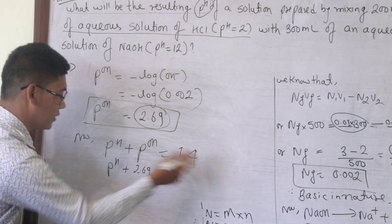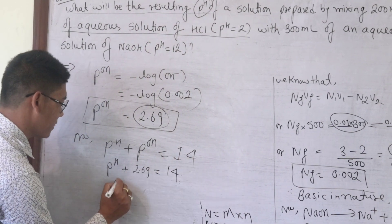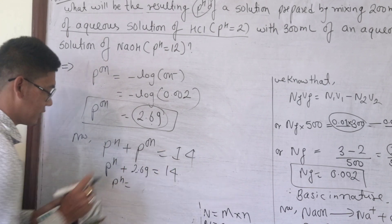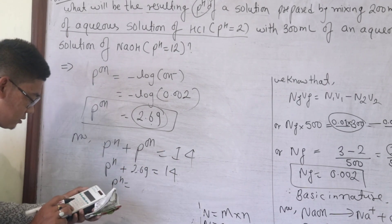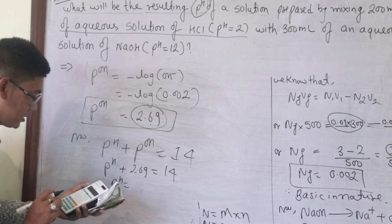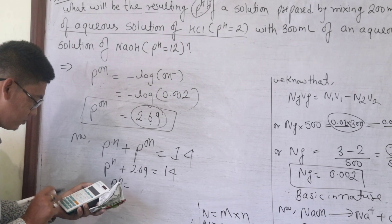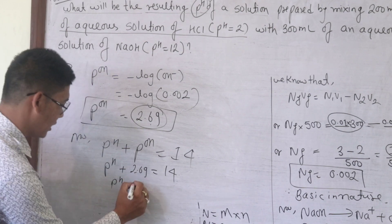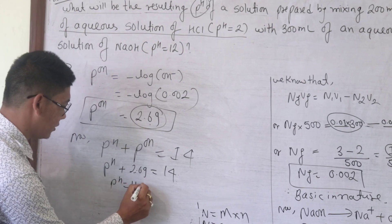Therefore the final pH is equal to 14 minus 2.69, which gives us 11.31.